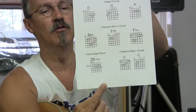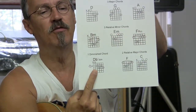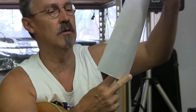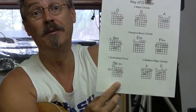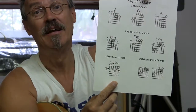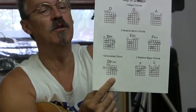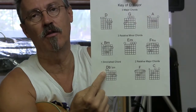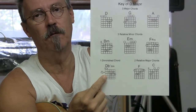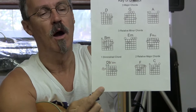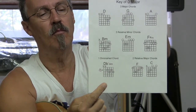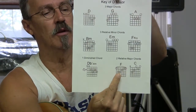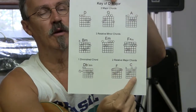And then there's our C sharp diminished — I misspoke and said D flat, but C sharp and D flat are the same. It's just named differently on paper. And then the two relative majors: F and C.